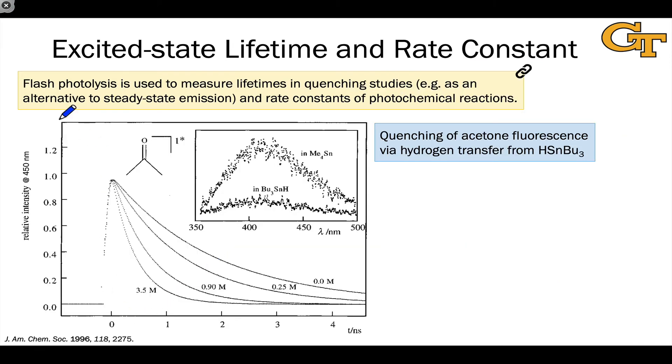Typical flash photolysis data may look something like this, like you see in the large graph right here. We've got time on the x-axis, relative intensity at 450 nanometers on the y-axis, fluorescence intensity in this case. Here we're looking at the loss in fluorescence intensity of singlet-excited acetone as a function of different concentrations of a quencher, which in this case is this tributyltin hydride molecule. You can see from the curve that as the concentration of quencher increases, decay happens more quickly, and as a consequence, the fluorescence lifetime of the acetone decreases.